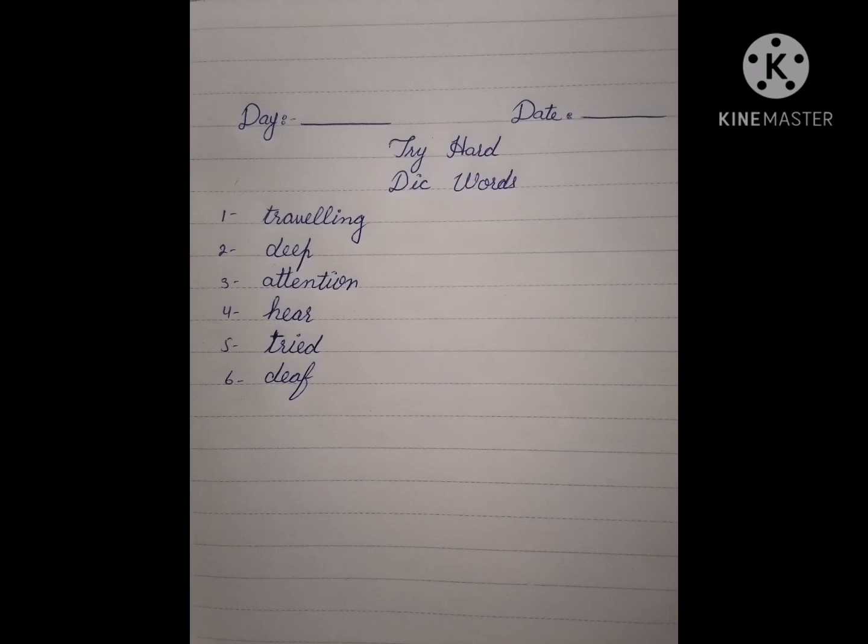The fourth one is 'hear' — H-E-A-R, hear. The fifth one is 'tried' — T-R-I-E-D, tried. The last one is 'deaf' — D-E-A-F, deaf. So these are your dictation words. You have to note them down in your notebooks in a very neat and clean way and get it checked by your mothers.